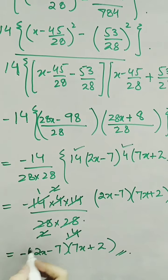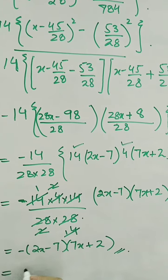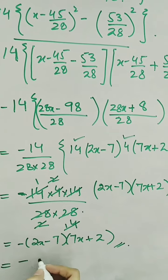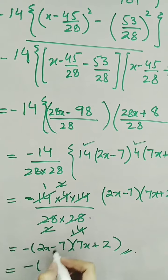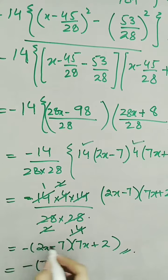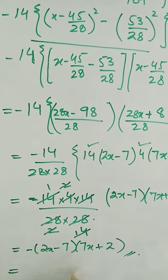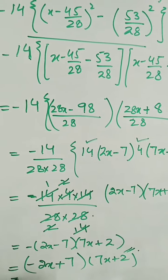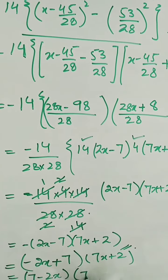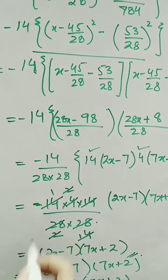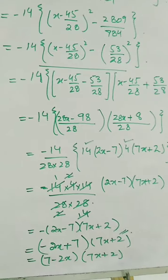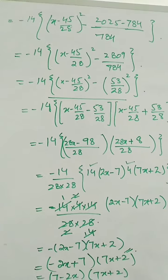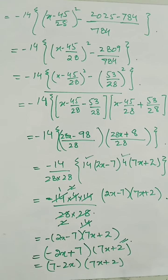These are the factors of our given expression, and we have a minus sign which is common. Taking this minus sign inside the bracket, we get (7 minus 2x) and (7x plus 2). Including the minus sign that we took as common initially, the factors of the given expression are (7 minus 2x) and (2 plus 7x).